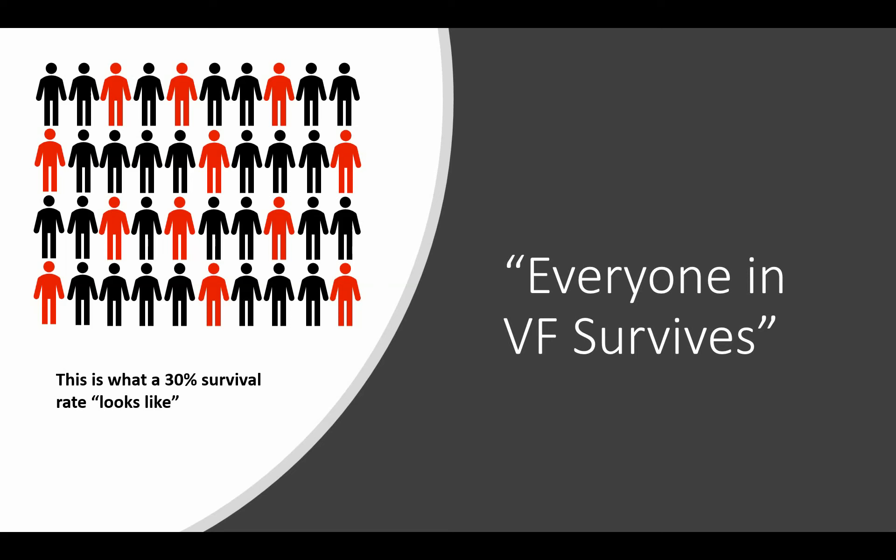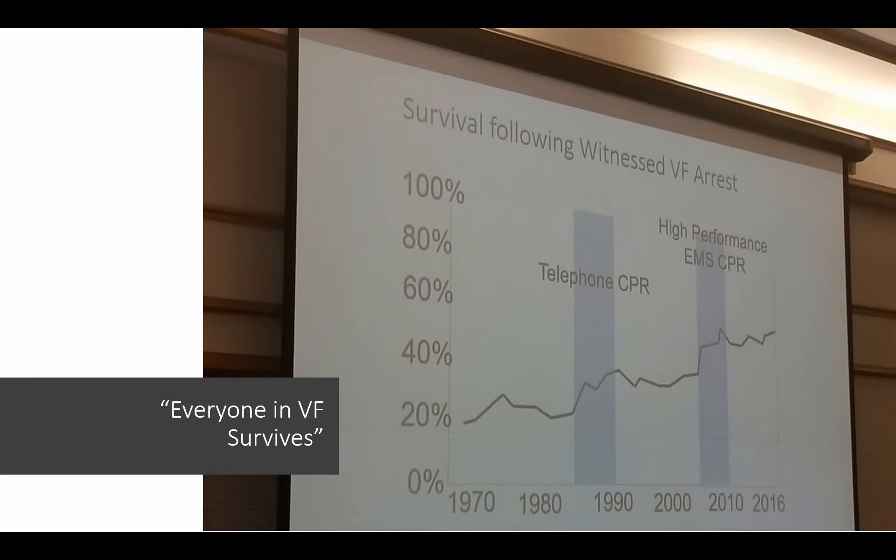We talk a lot about focusing on cardiac arrest survival, and this graphic shows you exactly what a 30% survival rate looks like. If we had this many people in cardiac arrest each year, the ones in red demonstrate how many of those would survive. To me that is a worthwhile endeavor — 30% survival is a pretty modest goal to start off with. The folks in Seattle started tracking this in the early 1970s and during that period had a survival rate of around 20%.